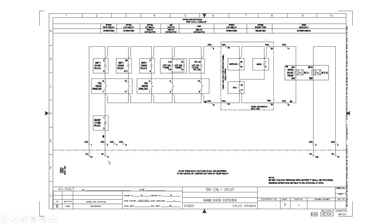In order to save the trip coil in the circuit breaker failure condition, there is a scheme called Save Trip Coil. When a self-reset relay operates there is no problem — it resets when the fault finishes. But when 86F1 or any other lockout relay operates, it will be operated continuously and the circuit breaker fails to operate.